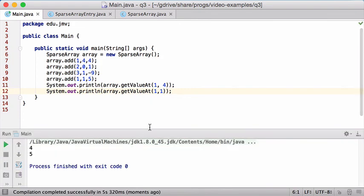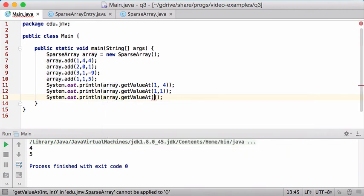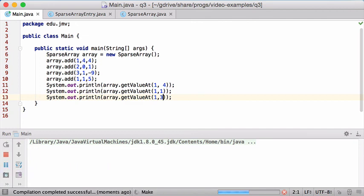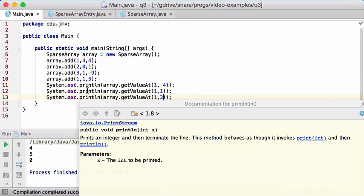Oh no, 1, 1 returns 5. I need one that returns zero. So 1, 3 - that's the zero. Let me run that. Zero. Okay, so looks like everything works.